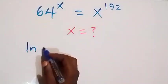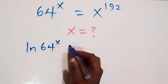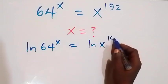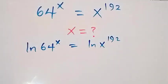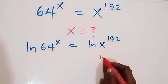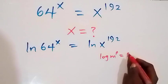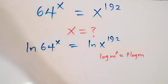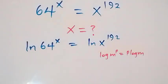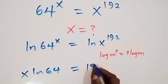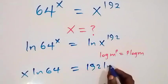We have ln 64 raised to power x equals to ln x raised to power 192. From here, we apply the law of logarithms: log n raised to power p is the same thing as p log n. Then we have x ln 64 now equals to 192 ln x.